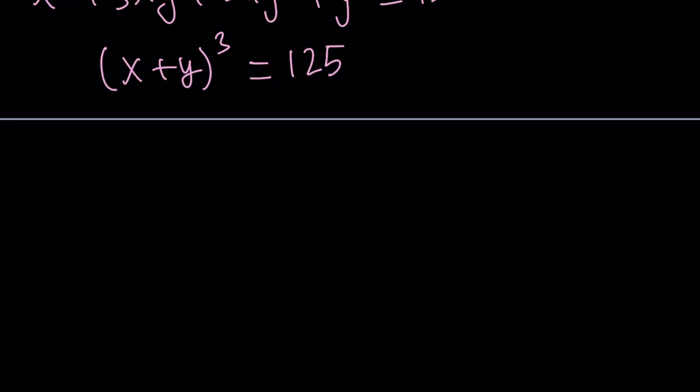Now we can cube root both sides. There's only one real number whose cube is 125, and that number is 5. From here, we can conclude that x plus y is equal to 5 if we're dealing with real numbers.